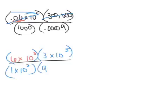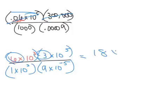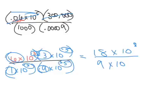And we're going to multiply that by 9 times 10. We moved it 1, 2, 3, 4, 5 — moved it 5 to the right, and when we move it to the right, it's negative. So now what we're going to do is multiply the top. So 6 times 3 is 18, times 10 to the 3 plus 5 is 8, over 1 times 9 is 9. And 3 plus negative 5 is negative 2, so we have that.